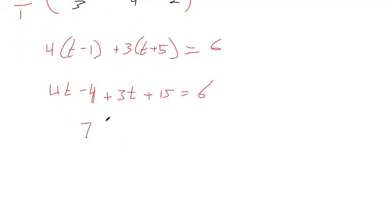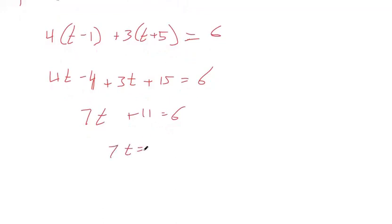4t plus 3t makes 7t. Negative 4 plus 15 makes 11. Subtract that 11 from both sides. We're having so much fun. Then divide by 7.